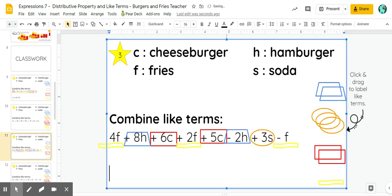All right, so let's combine everything. So I'm going to look at my cheeseburgers first. I have six cheeseburgers, plus five more cheeseburgers. That's 11 cheeseburgers.